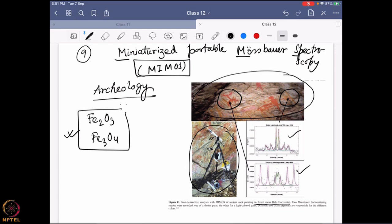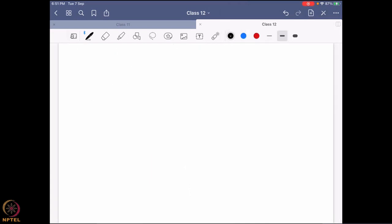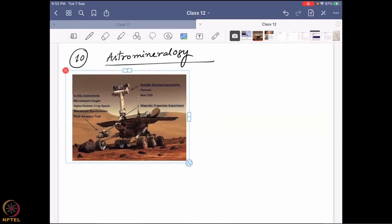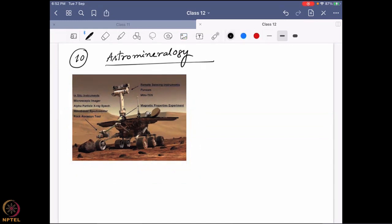And another example of this nice MIMOS spectroscopy can be found also for astrology. I should say astromineralogy. So all of you know that a few years back we have sent this kind of Mars rovers or rover systems to move around the Mars. So this is a picture. It is a picture not taken on the Mars because there is no one to take the selfie of these rovers over there.